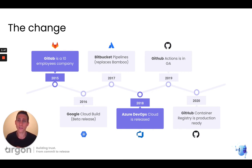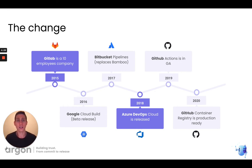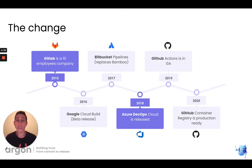In 2015, GitLab was just a 10-employee company. In 2016, Google Cloud Build was only released in beta — today it's one of the more popular build platforms out there. Bitbucket Pipeline replaced Bamboo in late 2017. Azure DevOps Cloud was introduced in 2018. GitHub Actions is now the third most used CI platform, yet it was only released in general availability in 2019 — just shy of two years ago. And GitHub Container Registry became production ready just last year. Many services we almost take for granted were only introduced in the last couple of years.